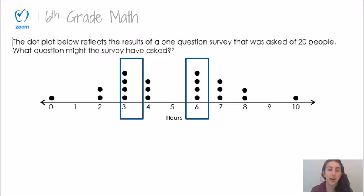For example, in this dot plot I see that 3 and 6 were the most common answers. Four people answered this survey question with 3, and four people answered it with 6. I also see that the unit here is hours, so the question needs to produce a response where somebody is giving an amount of hours ranging from 0 to 10, where 3 and 6 are the most common answers.